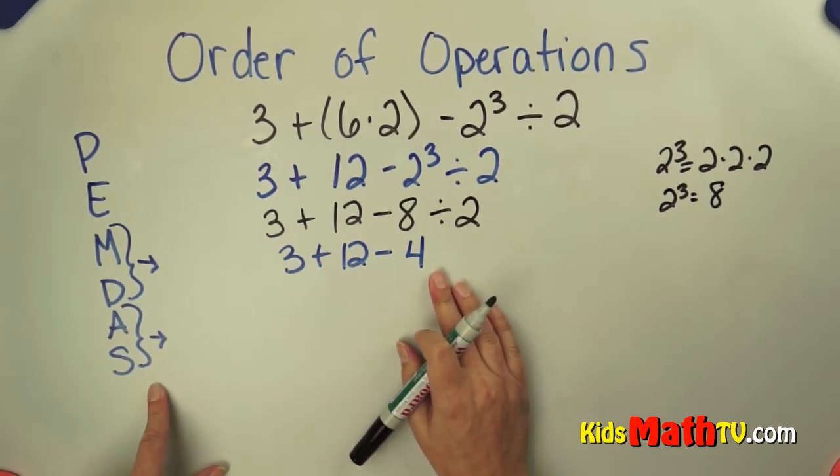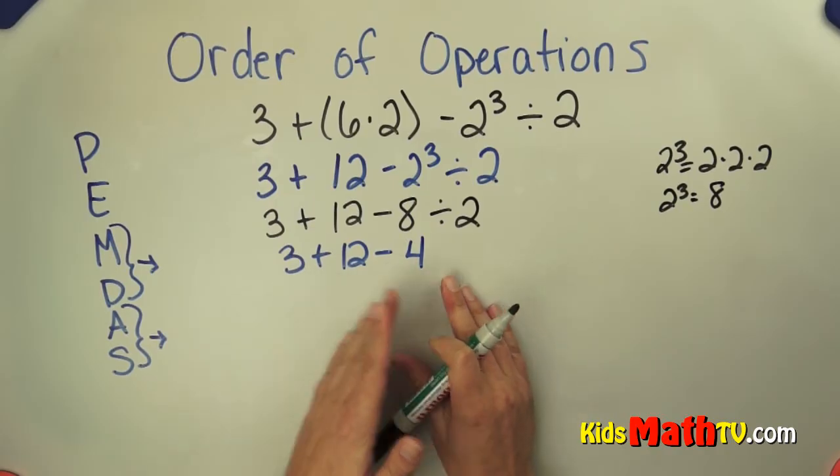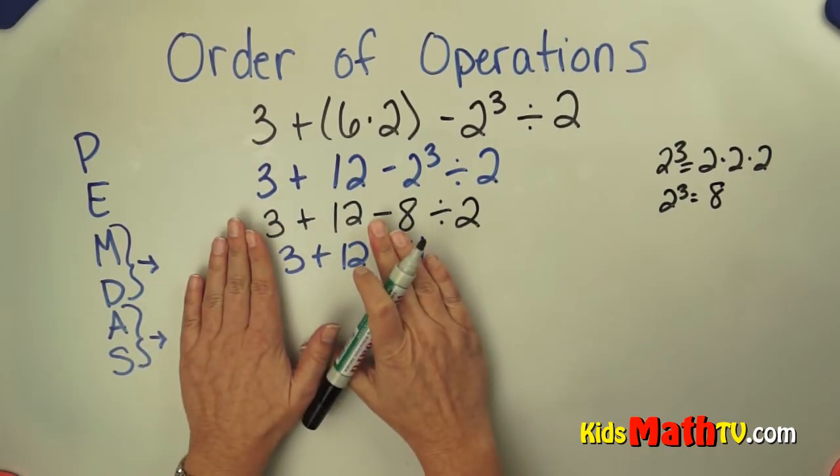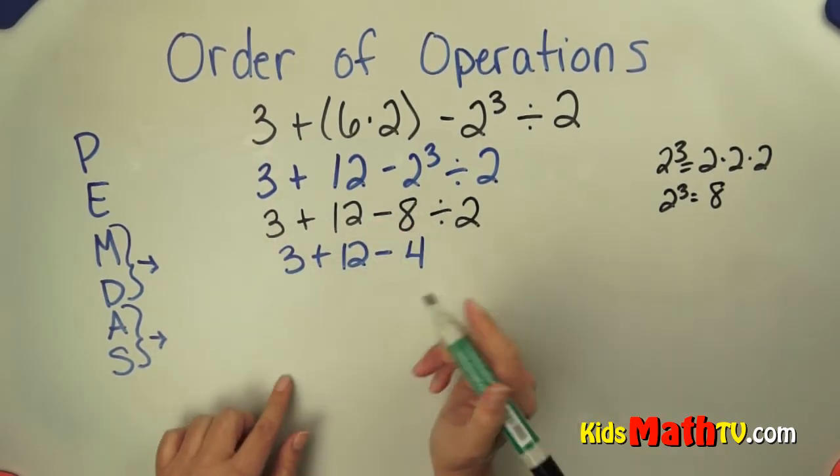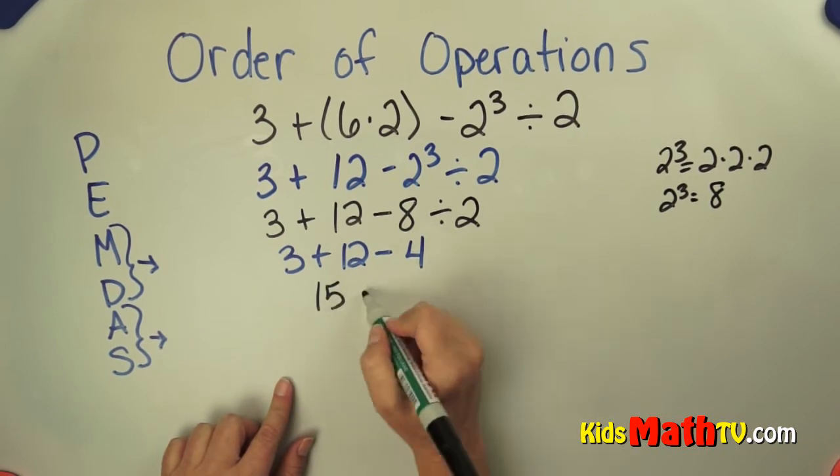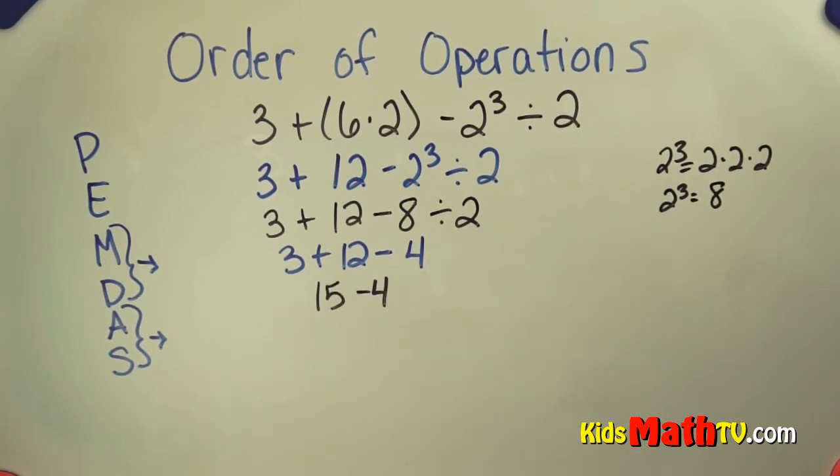So now I add and subtract from left to right. I have to do 3 plus 12 first. 3 plus 12 is 15 minus 4. Now all I have left is subtraction. 15 minus 4 is 11.